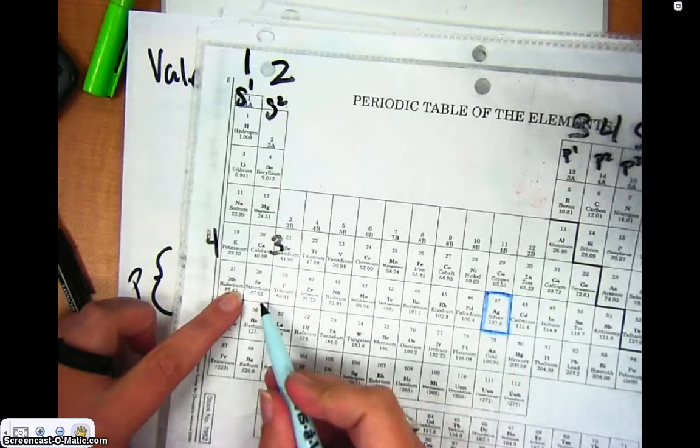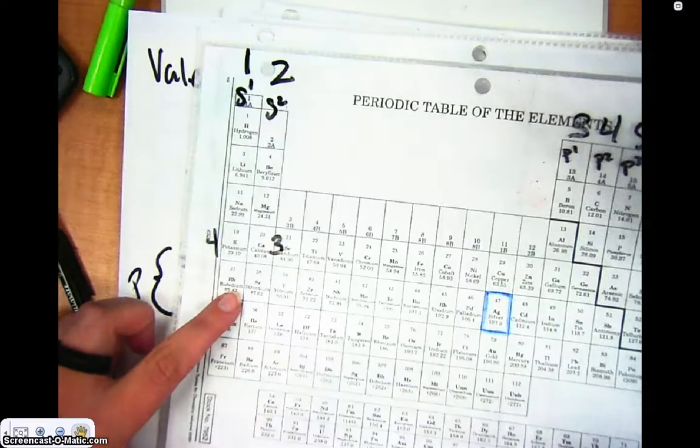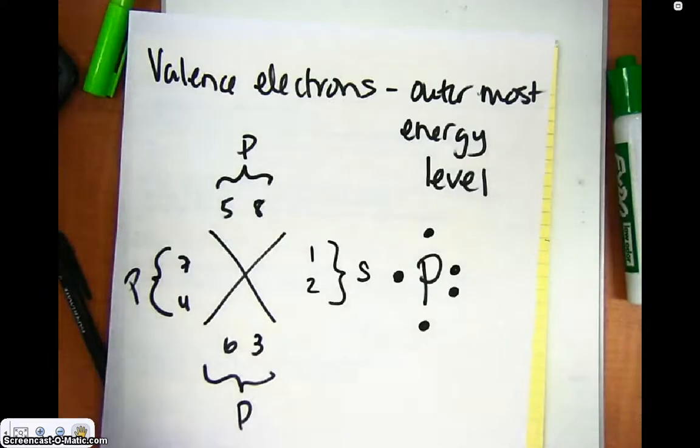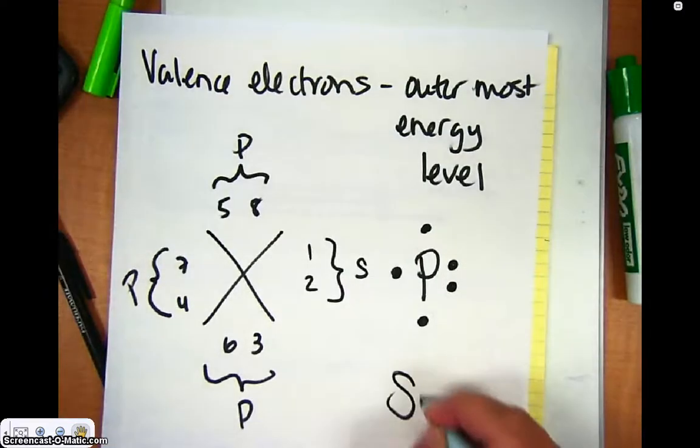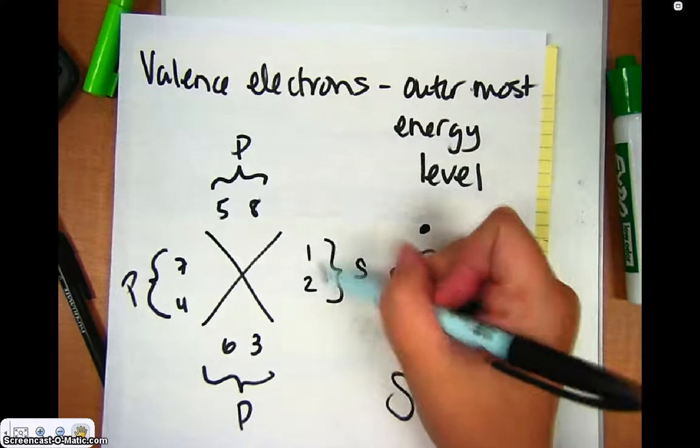Let's look at strontium. Strontium is in column 2, so it's going to have two valence electrons. So I just write the symbol for strontium, and then I put the first two here and here.